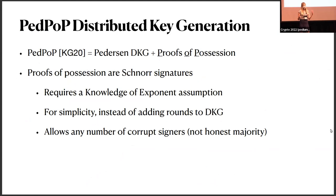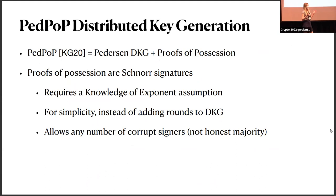The distributed key generation protocol is called PEDPOP — the Pedersen DKG together with proofs of possession. These proofs of possession are themselves Schnorr signatures, which requires a knowledge-of-exponent assumption. This is chosen for simplicity because we did not want to add rounds to the DKG. It allows any number of corrupt signers, including a dishonest majority.